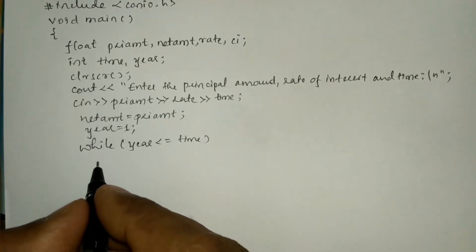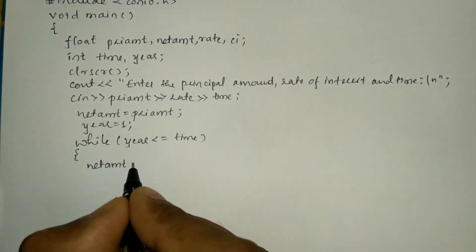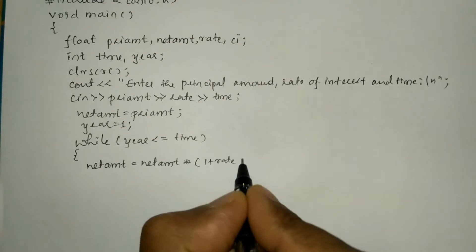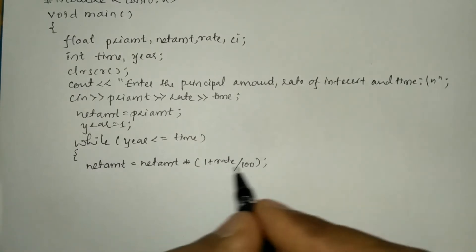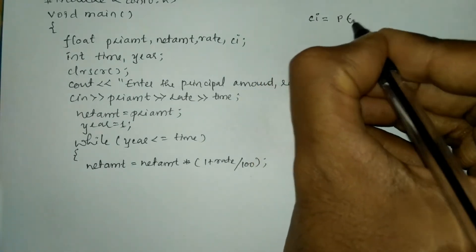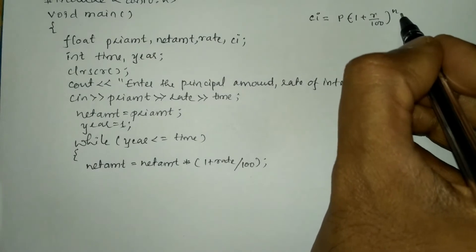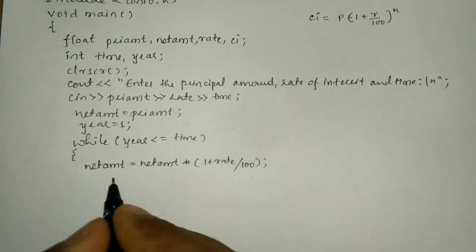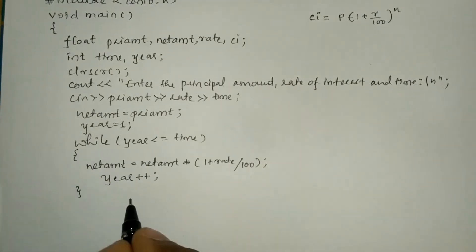If this condition is true, control enters the body of the while loop. Inside the loop, we calculate: net_amount = net_amount * (1 + rate / 100). This follows the compound interest formula: principal amount * (1 + rate/100) to the power n, where n is the number of years. After computing, we increment year by 1 using year++, then close the while loop with a curly closing brace.